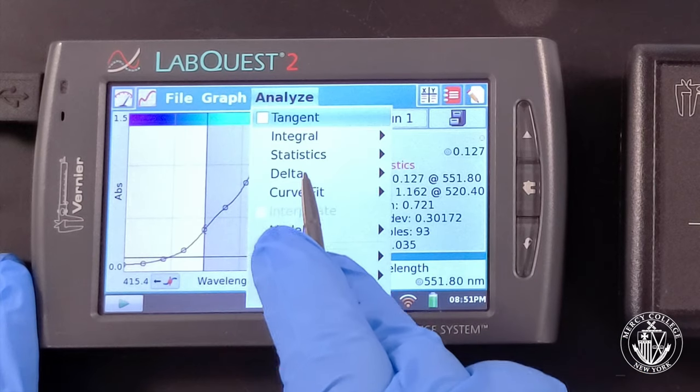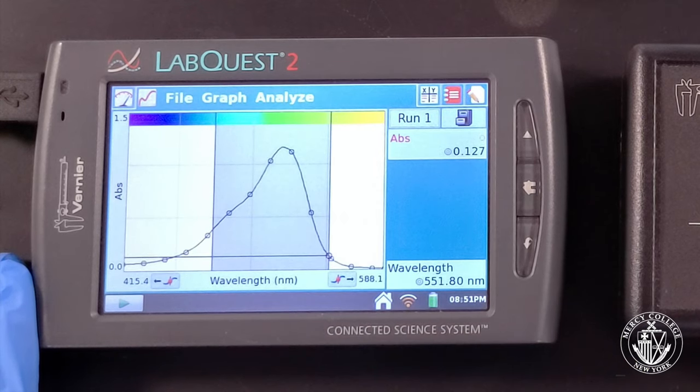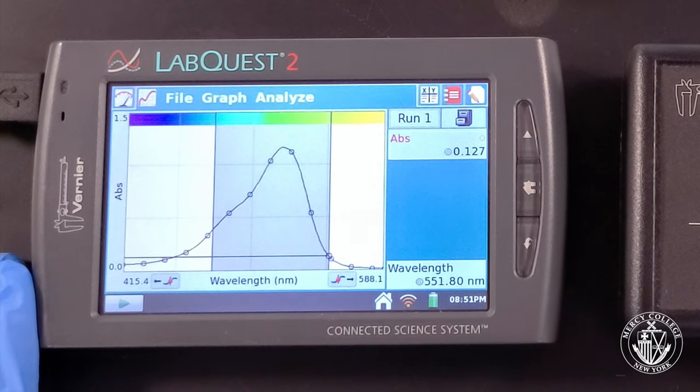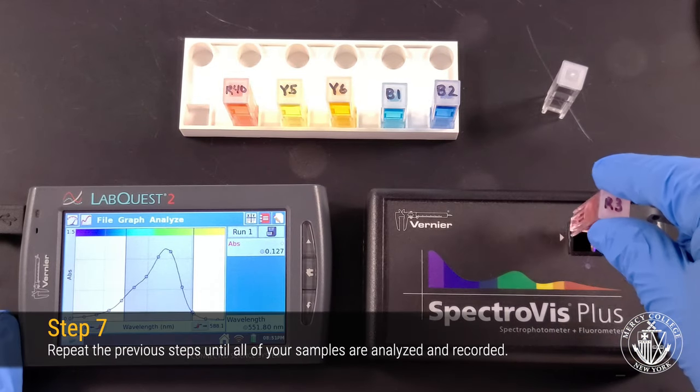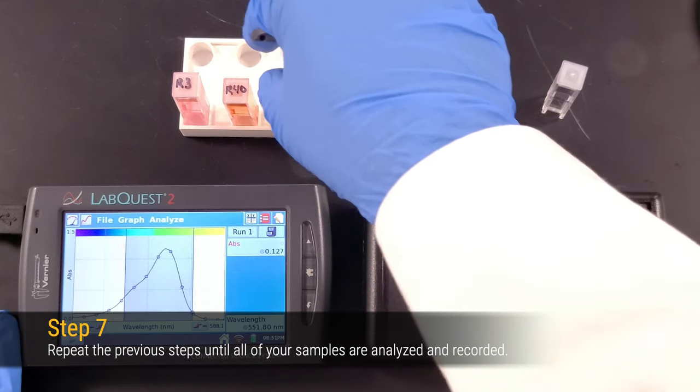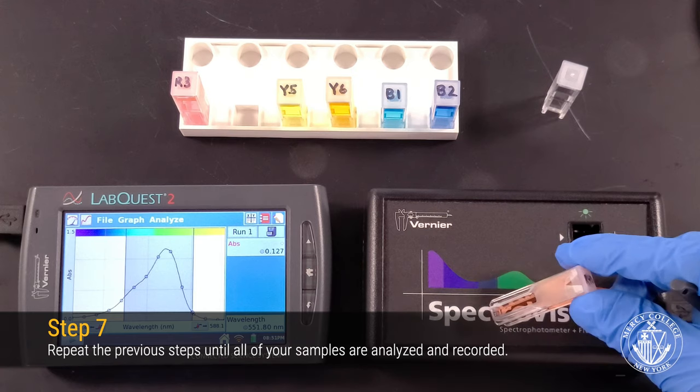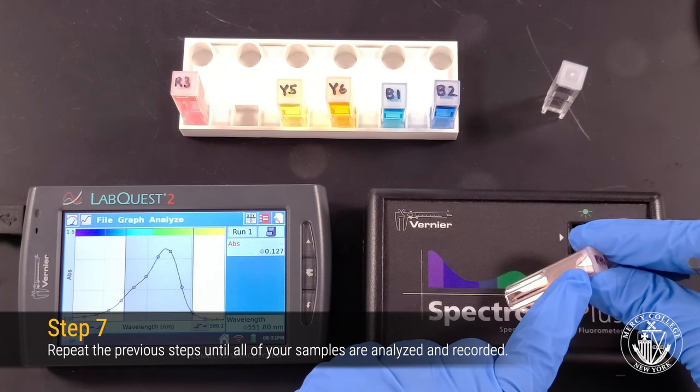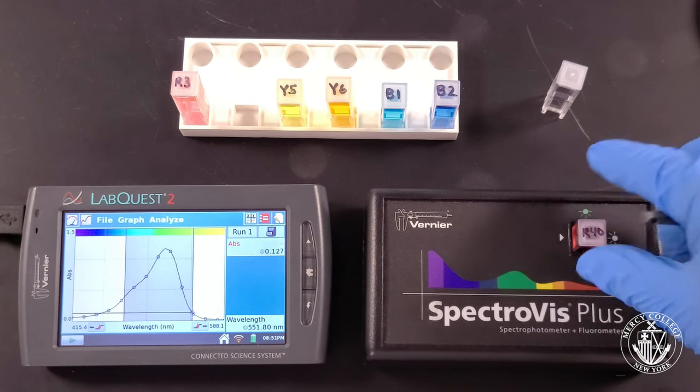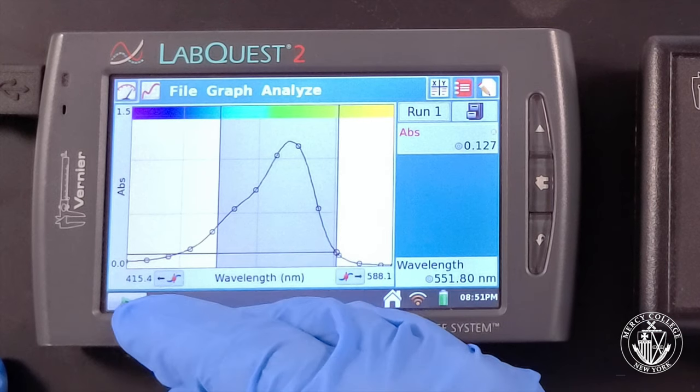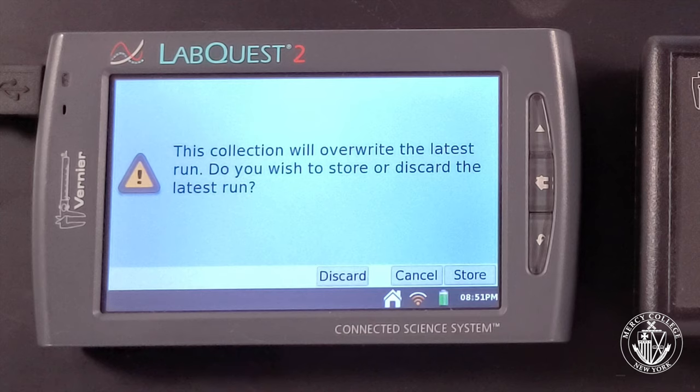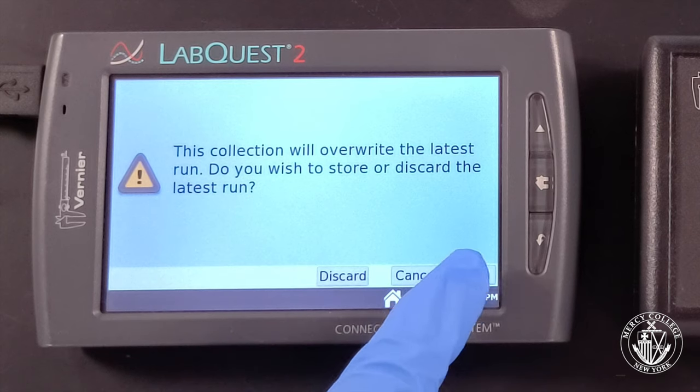Again select Statistics from the Analyze menu to clear the Statistics panel on the right. Remove your dye standard from the spectrophotometer and select another dye standard to analyze. Insert your standard into the spectrophotometer, again making sure the arrow on the cuvette aligns with the arrow on the spectrophotometer. Use the Play button to record your next spectrum. Select Store to save your previous spectrum.